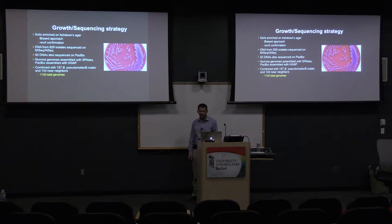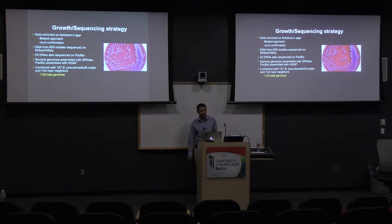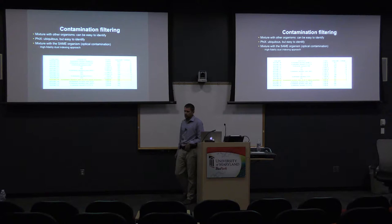We sequenced 829 DNAs on the Illumina MiSeq and HiSeq platforms. For clades without good representatives, we did PacBio sequencing to get finished or near-finished genome assemblies. We assembled Illumina genomes with SPAdes and PacBio genomes with HGAP. Combining these with GenBank entries gave us about 157 target and 143 near-neighbor genomes from GenBank, totaling just over 1,100 genomes analyzed.